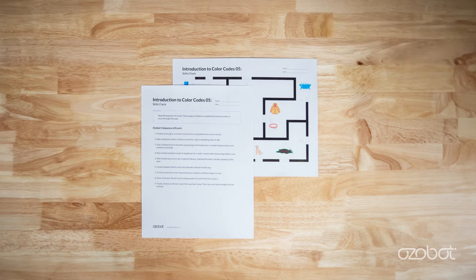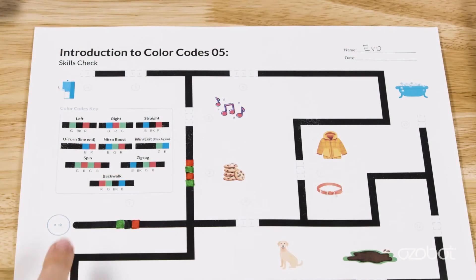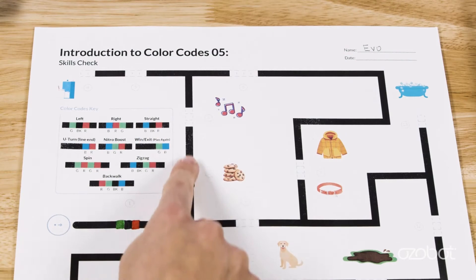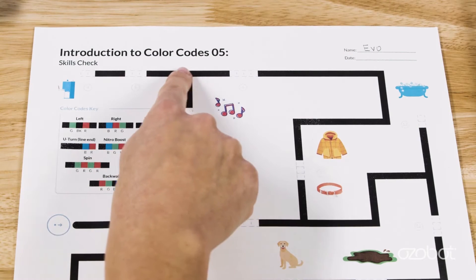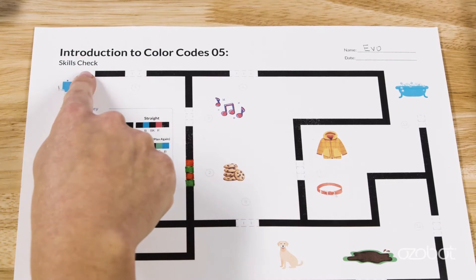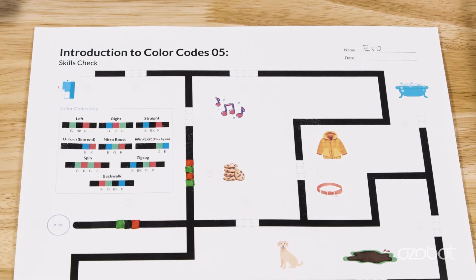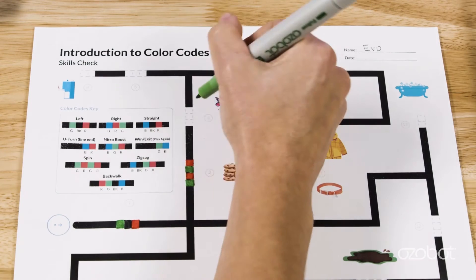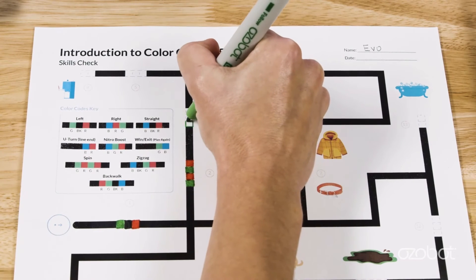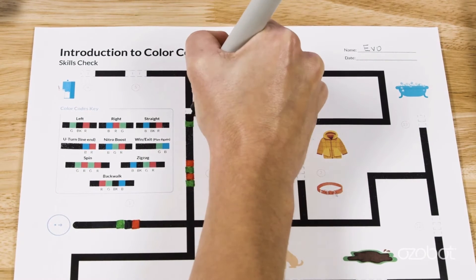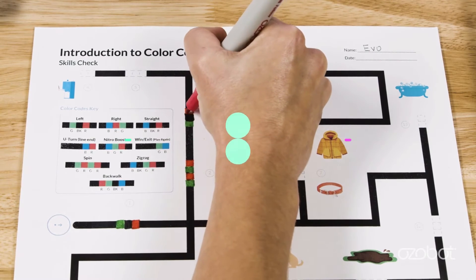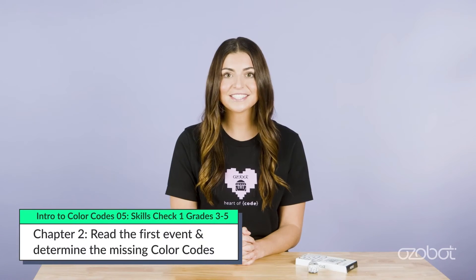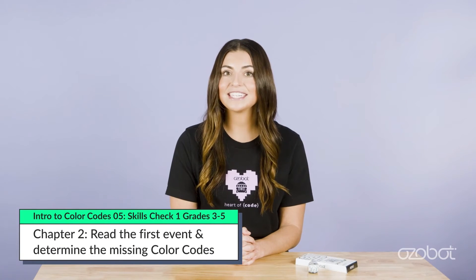You will read one event at a time and use the color codes key at the bottom of the maze to choose the missing color codes that go with each event. Let's get started with activity sheet one.